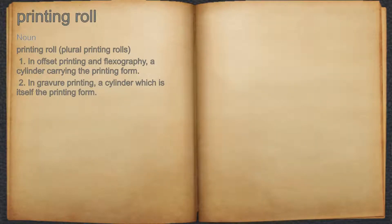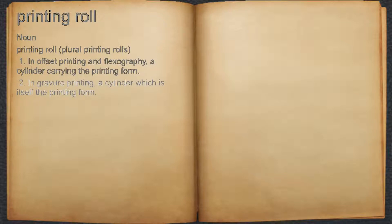Printing role. Noun. 1. In offset printing and flexography, a cylinder carrying the printing form. 2. In gravure printing, a cylinder which is itself the printing form.